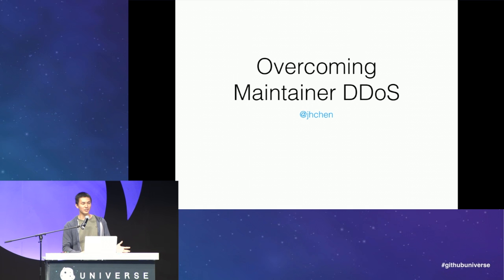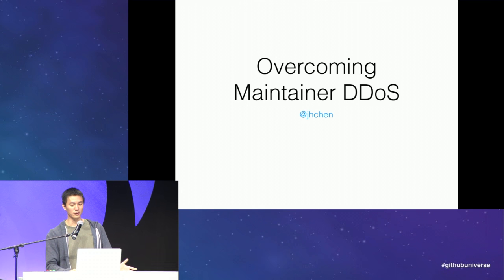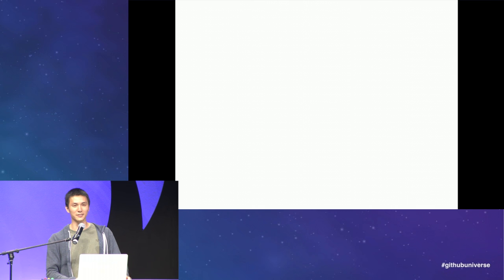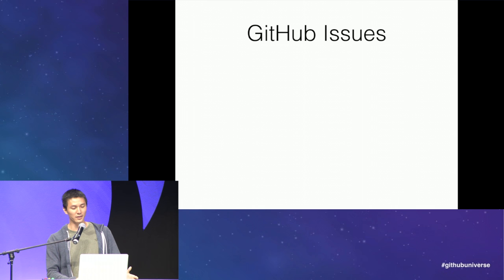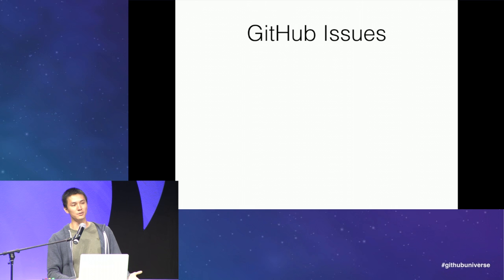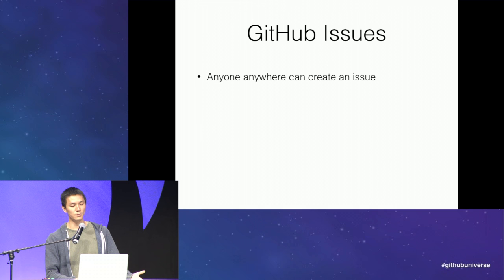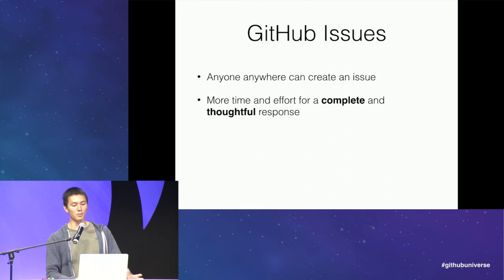All right, thank you. So good afternoon, everyone. I'm going to be talking about overcoming maintainer DDoS. It starts with GitHub issues, which is where most communication happens for an open source project — and a lot of closed source projects. It has the great benefit that anyone, anywhere, can create an issue, which makes GitHub issues very democratic, fair, and open — which is awesome.